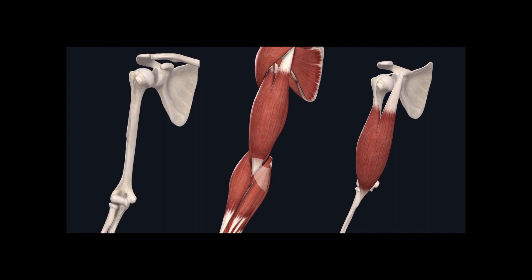The first muscle we're going to learn in the brachium is the biceps brachii muscle. Biceps means two heads, so this is the brachial muscle with two heads. There's one head here — the one on the left side is called the long head of the biceps brachii muscle — and the one found on the medial aspect is called the short head of the biceps brachii muscle.